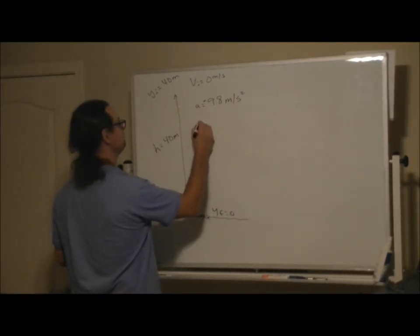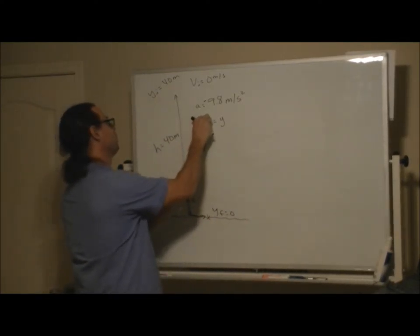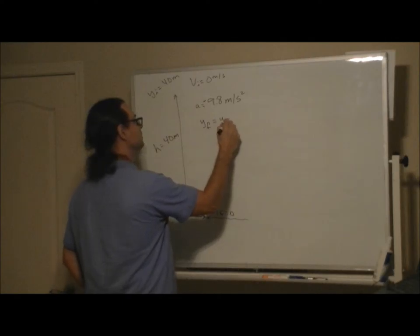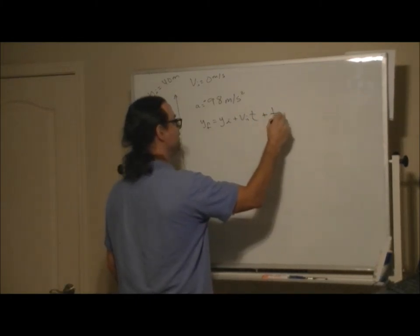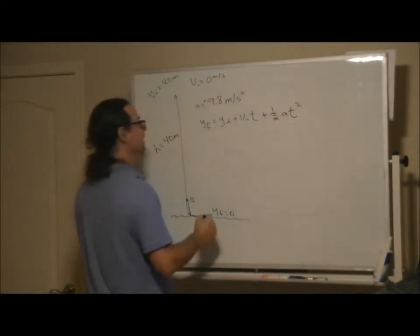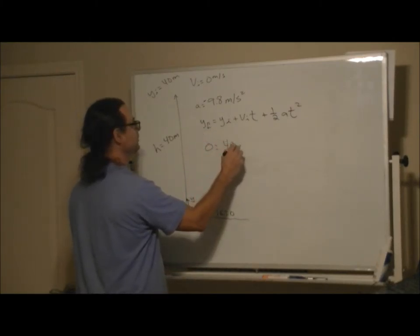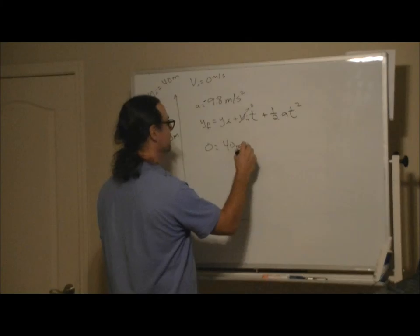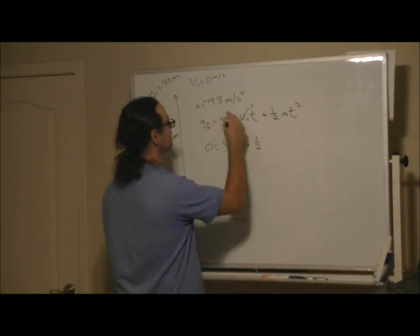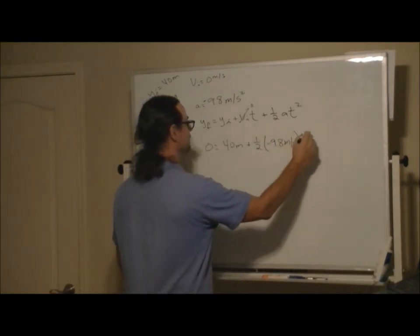So Y final equals Y initial plus V initial times the time plus one half A T squared. And in this case, Y final equals zero. Y initial is 40 meters. V initial is zero because the pelican isn't moving vertically. And then plus one half A is negative 9.8 meters per second squared, and then times T squared.